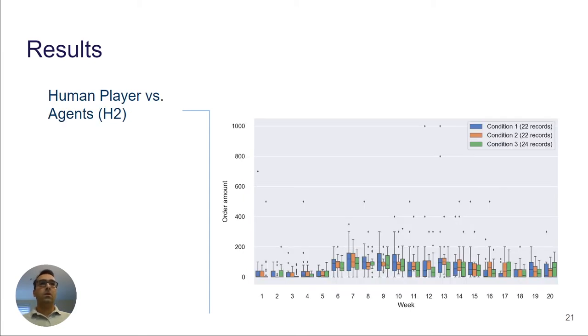Next, we compared the ordering behavior of human players in all conditions. We can see that the human behavior is not affected by the behavior of agents. In fact, the presence of different types of agents didn't have much impact on the ordering behavior of players. We also performed a one-way ANOVA for each time step and found that there is not a significant difference between the means of order amounts of players in different conditions, which supports the second hypothesis.